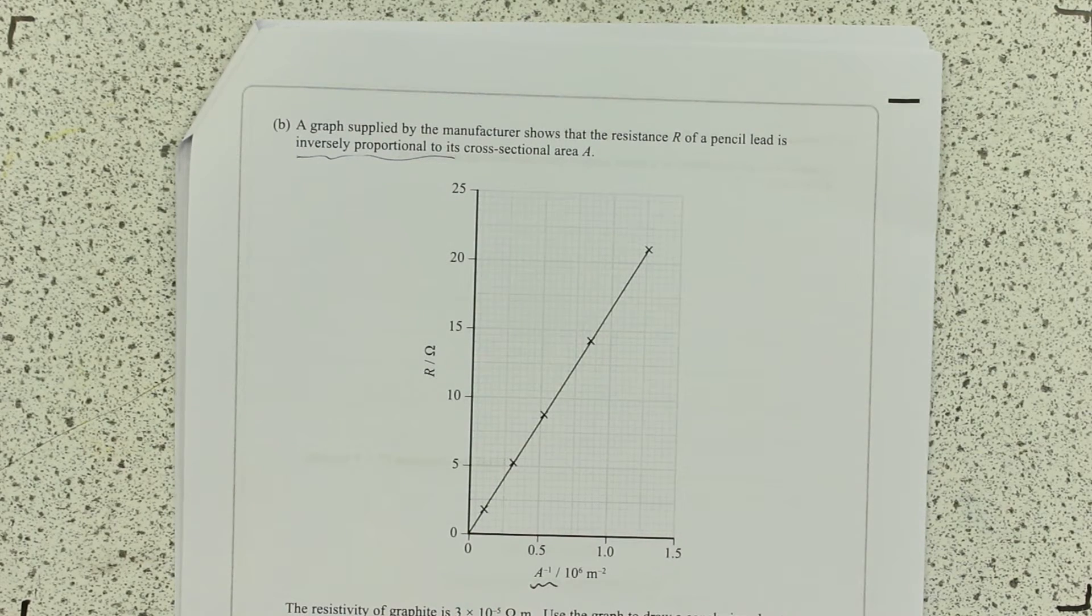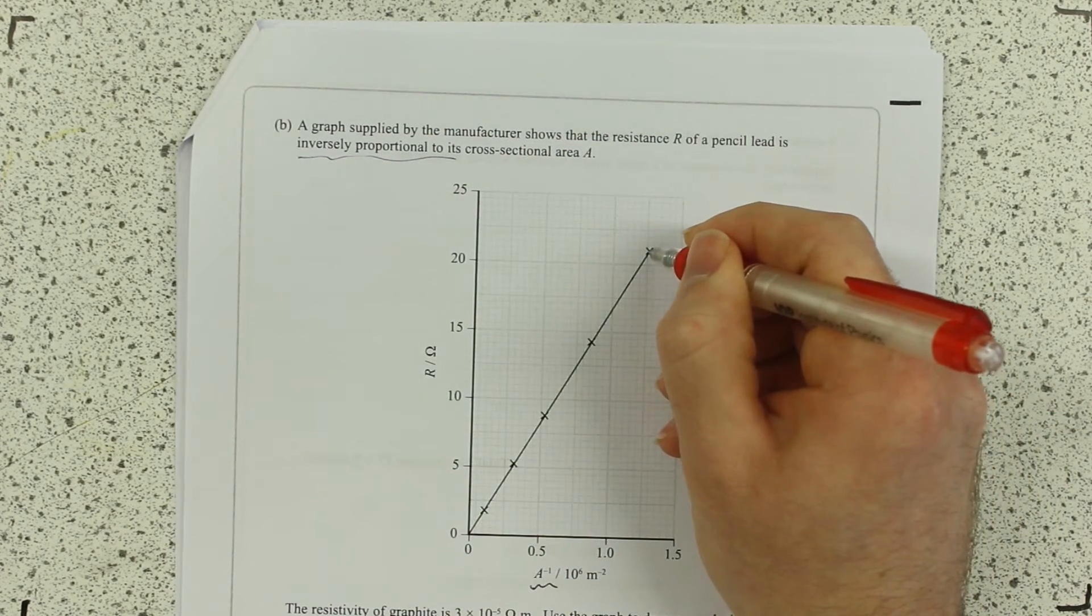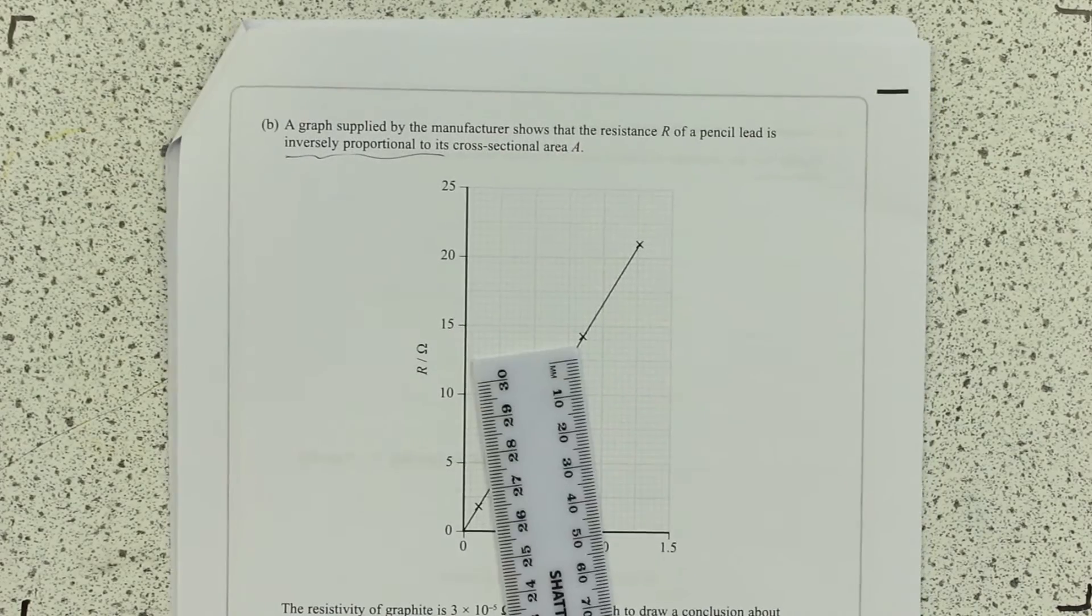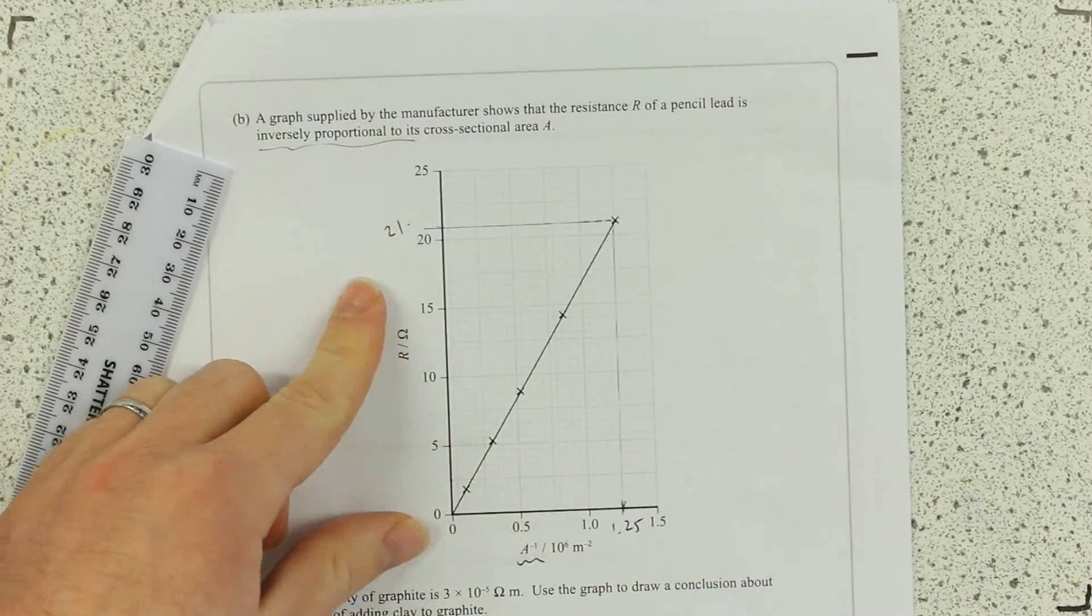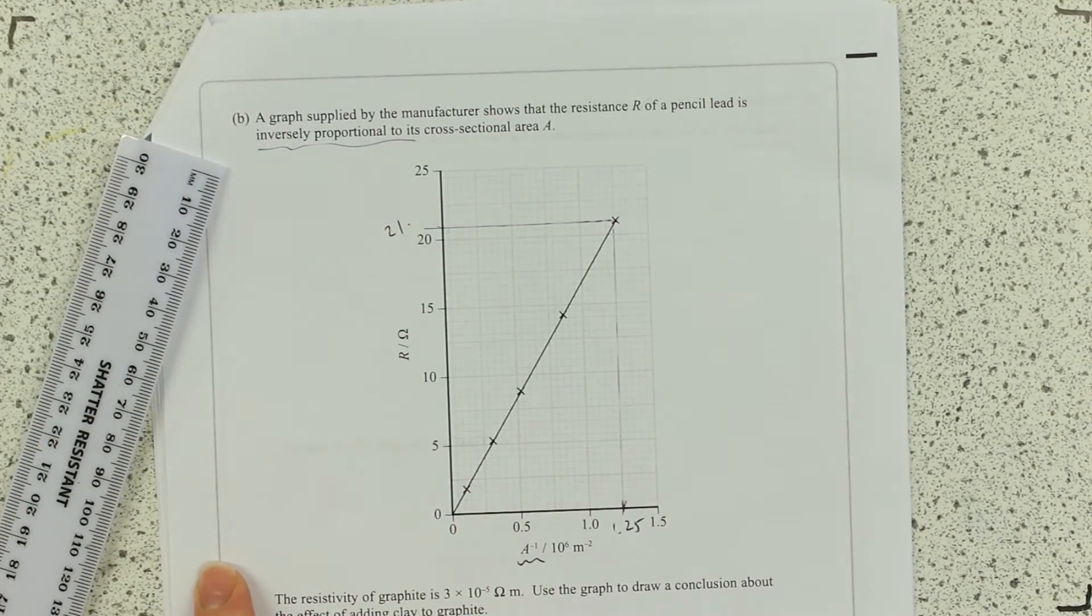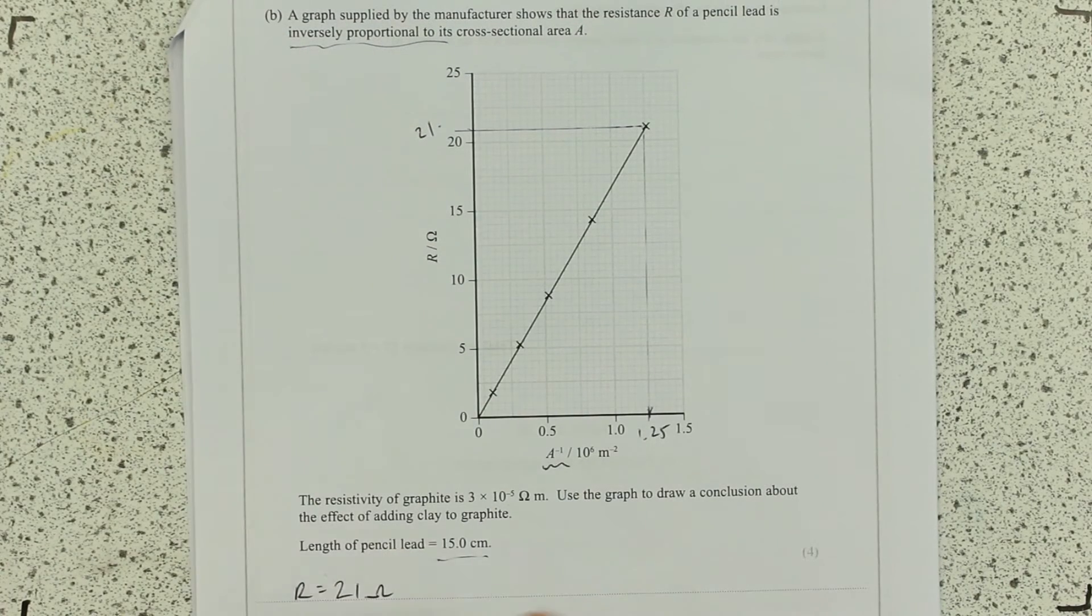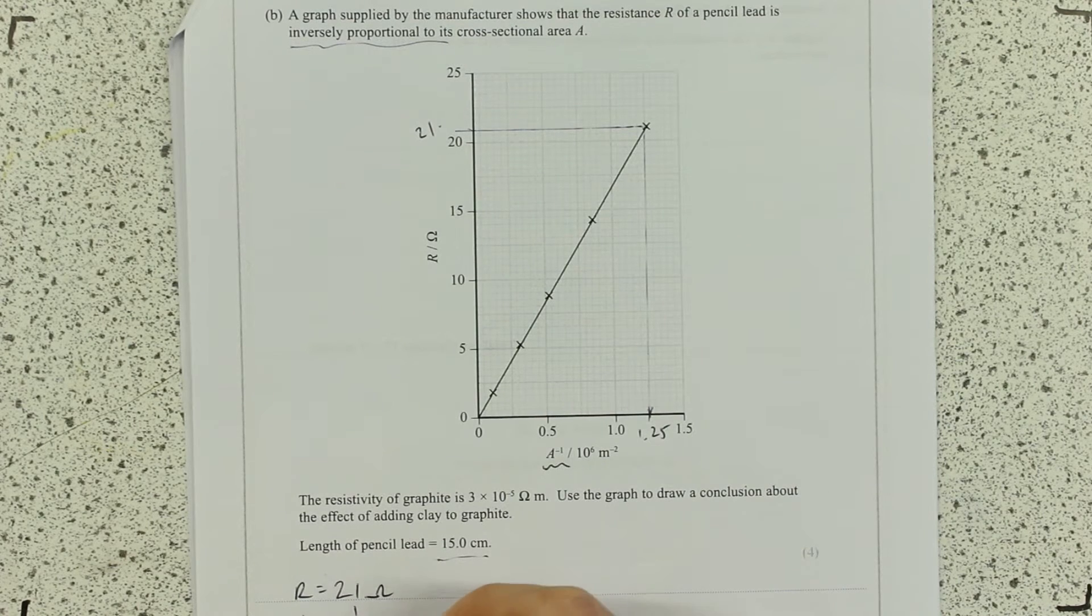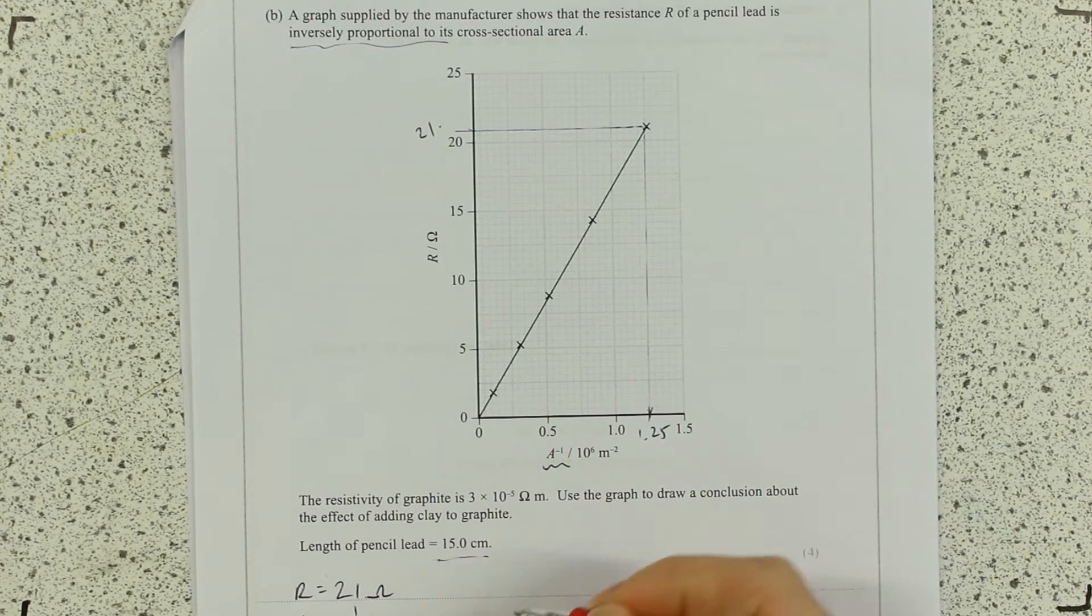Essentially what we can do is we can take readings from this graph and take the largest possible triangle that I can with a ruler. Ruler's ready at all times. And read them off as R. 21 ohms, just checking my units as I go. And A is 1 over 1.25 times 10 to the minus 6.